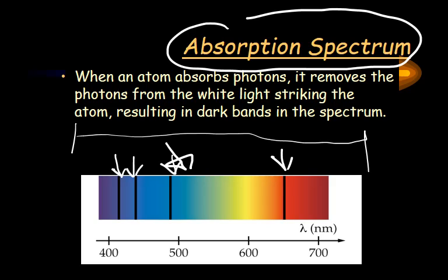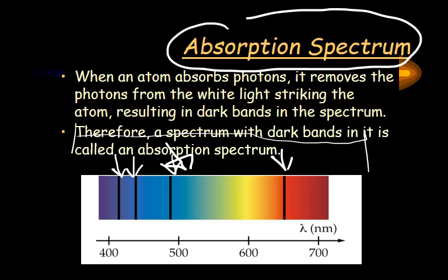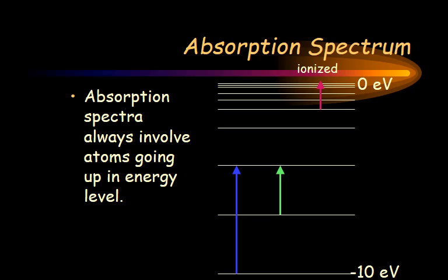When the electron goes back down, it'll emit light, but in random directions. So if you're on the other side, you're not necessarily going to get those other photons — you're going to get that direct beam of white light that passes through except the ones that are absorbed. Some of that light may represent an electron jumping up from one level to another. A blue photon that comes in could correspond to that, whereas if an electron jumps up to a different level, that could be a green photon and so on. With absorption, they always match those very specific energy levels.